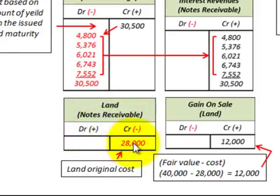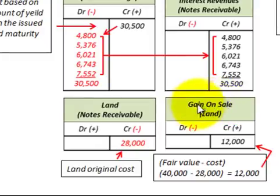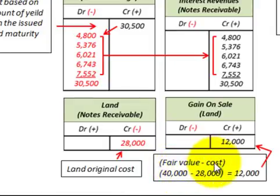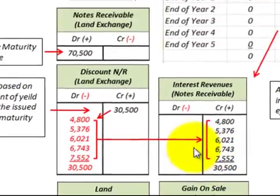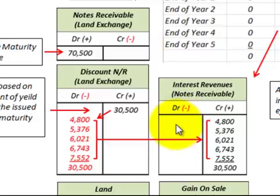We also credit the land account by twenty-eight thousand dollars — the land's original cost — and recognize a gain on sale of twelve thousand dollars on the income statement. That gain is calculated as the fair value of the land at forty thousand dollars minus the cost of twenty-eight thousand dollars, giving us twelve thousand dollars. This is how we account for a note receivable exchanged for land, property, or services.